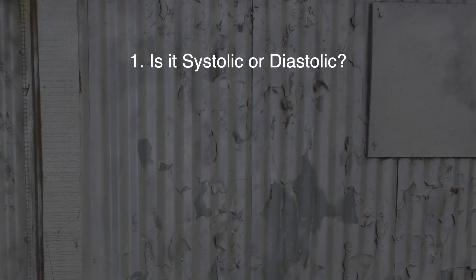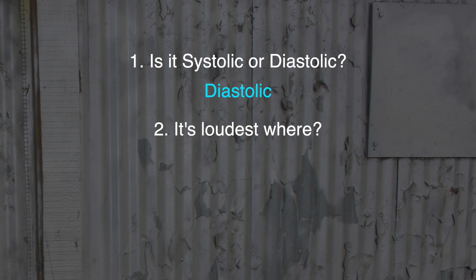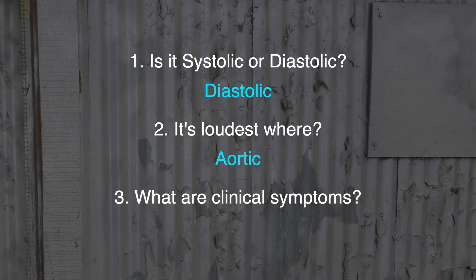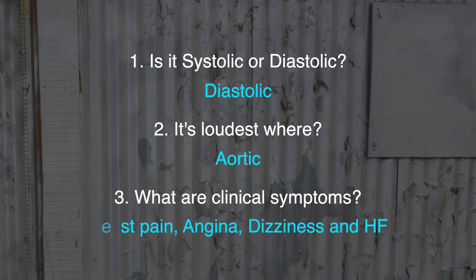Ask yourself: is it systolic or diastolic? It's diastolic. It's described as an early diastolic decrescendo murmur. Where do you hear it the loudest? It's aortic, heard best at the third and fourth intercostal space. What are the clinical symptoms? It can cause chest pain, angina, dizziness, and sometimes heart failure. Findings on your EKG may detect left ventricular hypertrophy.